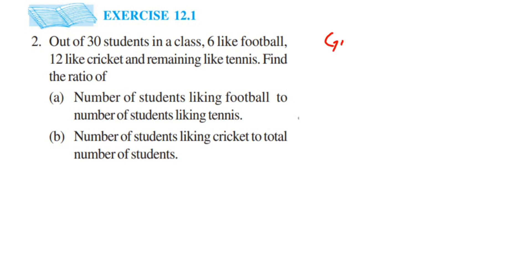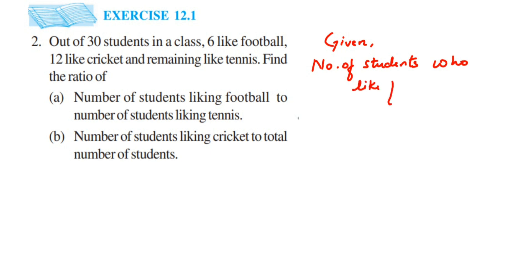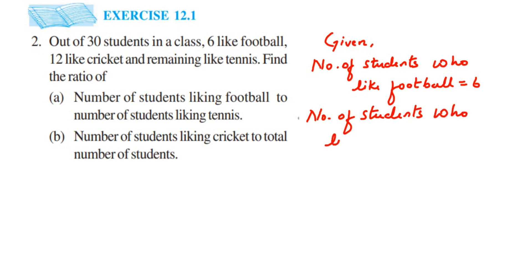Let's write down what is given. The number of students who like football is 6, and the number of students who like cricket is 12. The remaining students like tennis.